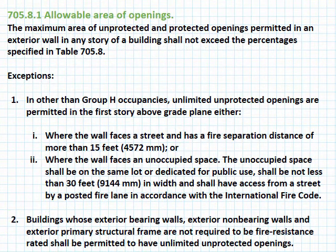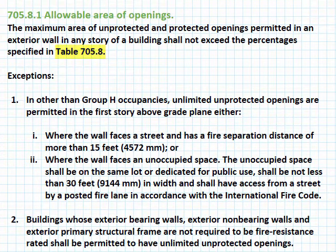The allowable area of openings on exterior walls is governed by IBC Section 705.8.1, which refers the code user to Table 705.8 for the maximum area percentages of exterior walls in any story that can contain either protected or unprotected openings. Section 705.8.1 contains a number of exceptions. Exception 2 permits an unlimited number of unprotected openings where the exterior non-bearing walls and exterior primary structural frame are not required to be fire resistance rated.